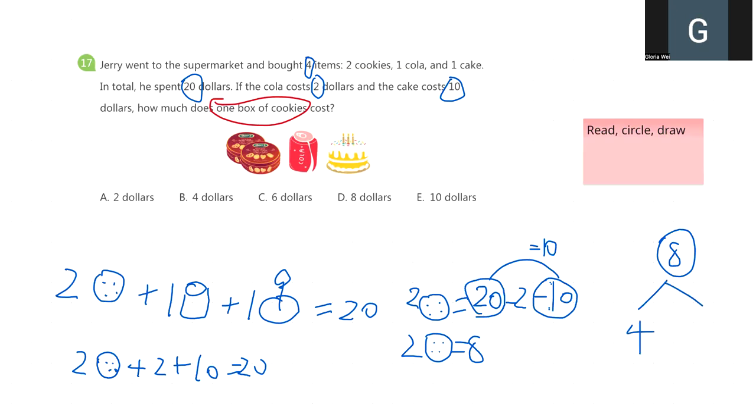Many students chose A during the exam time because they didn't pay attention when we read the question. They think the question just asked for 2 boxes of cookies. That's how they made the mistake here.